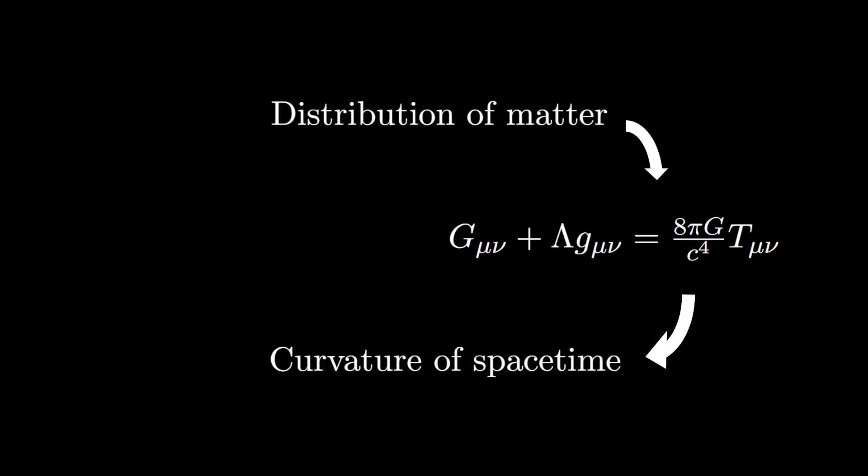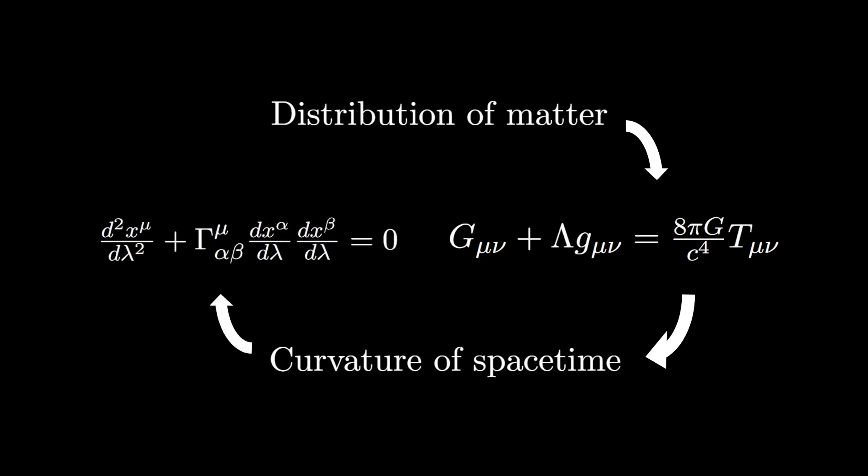So for a given distribution of matter and energy, these equations enable us to calculate the curvature of space-time. Then having calculated the curvature of space-time, the matter and energy content within that curved space-time manifold is going to move. This movement is described by the following equation, which is called the geodesic equation. After a bit of time, we will then have a new distribution of matter, which means that we have to start from the beginning again.